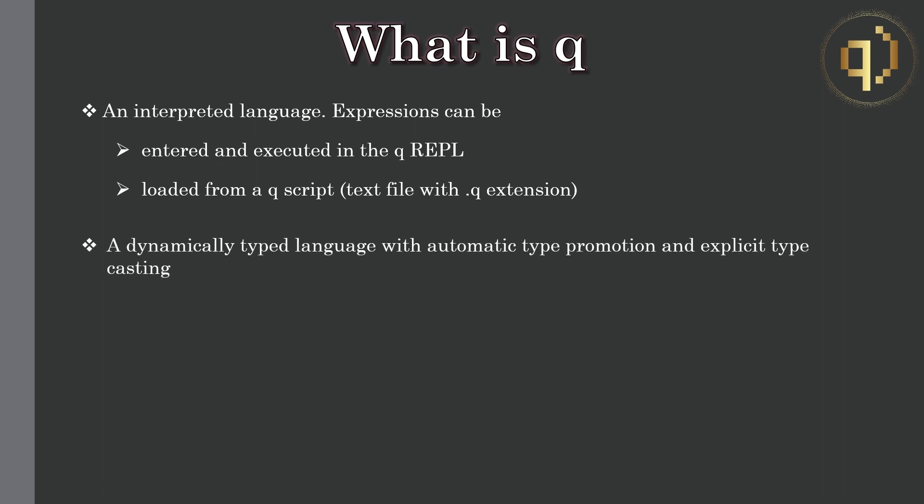Q is a dynamically typed language. Although there are many in the programming community who are adverse to dynamically typed languages, Q benefits from this choice by making the code more compact as there is no need to declare variables.